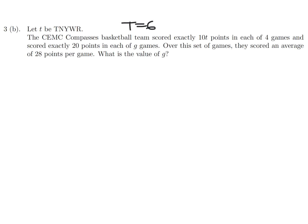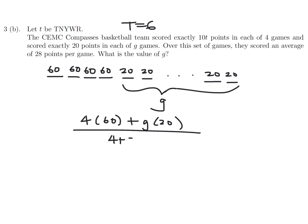T is 6. If the CEMC Compasses basketball team scored exactly 10t points in each of four games and scored exactly 20 points in each of g games, over this set of games, they scored an average of 28 points per game. What is the value of g? So we've got 1, 2, 3, 4. And then we have a whole bunch of g's. So the first four games, they score 60, right? Because 10t and t is 6. And then for the next one, they all score 20. So they want you to find the value of g.